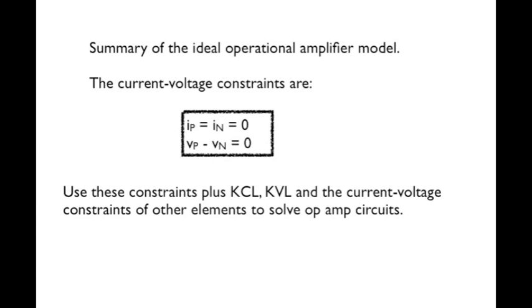Well, let's summarize our lesson. The ideal op-amp model is also known as the zero-volt, zero-amp model. We take the input currents to be zero, and we take the difference between the node voltages at the inputs to be zero. Using these constraints plus KCL, KVL, and the current voltage constraints of other elements in the circuit, be they resistors or inductors, we arrive at the variables of interest in the circuit.